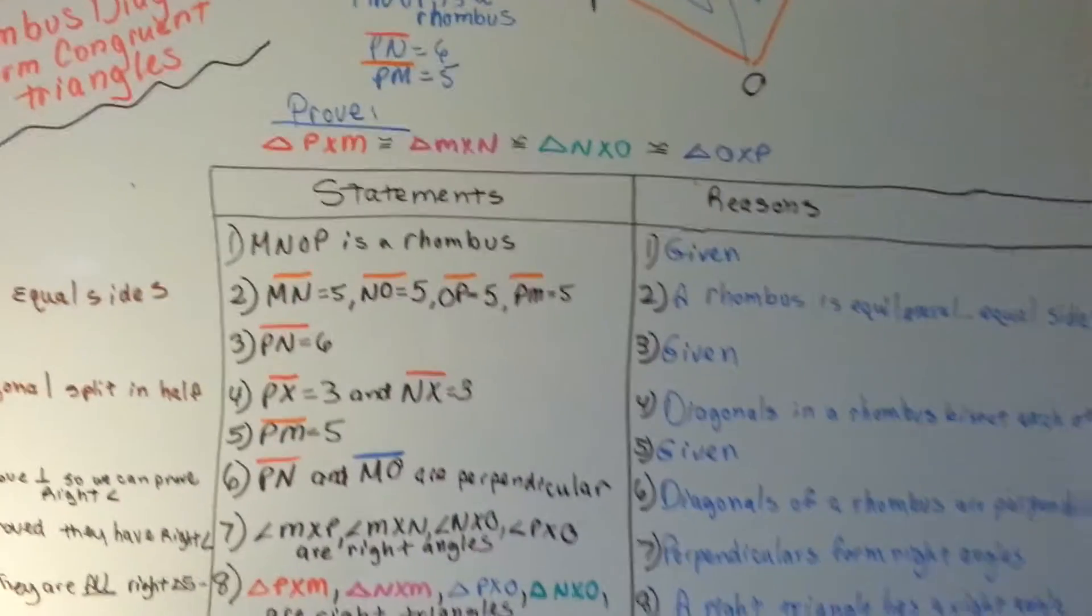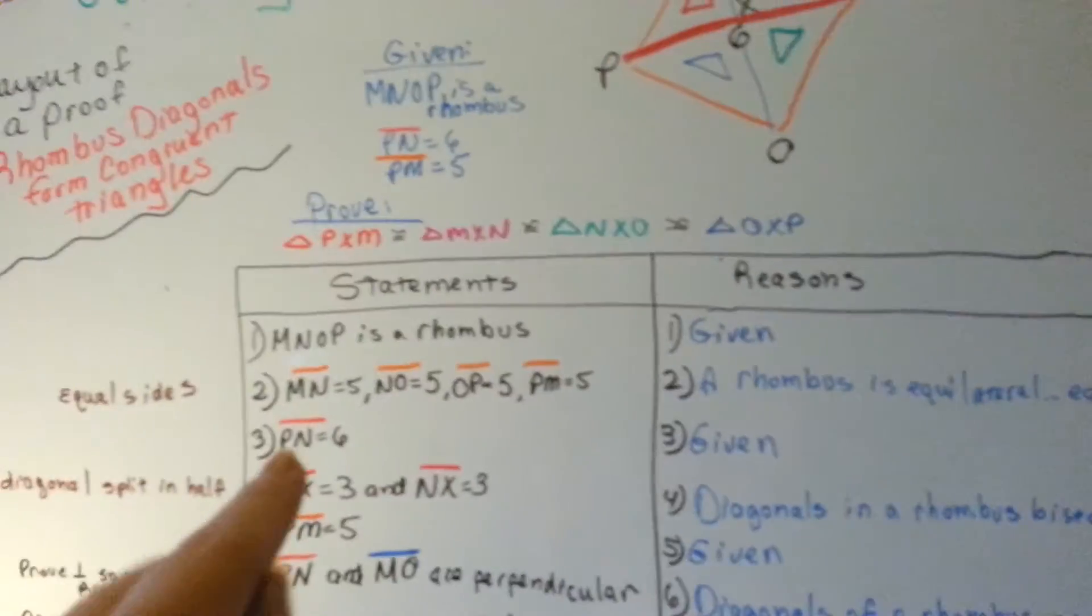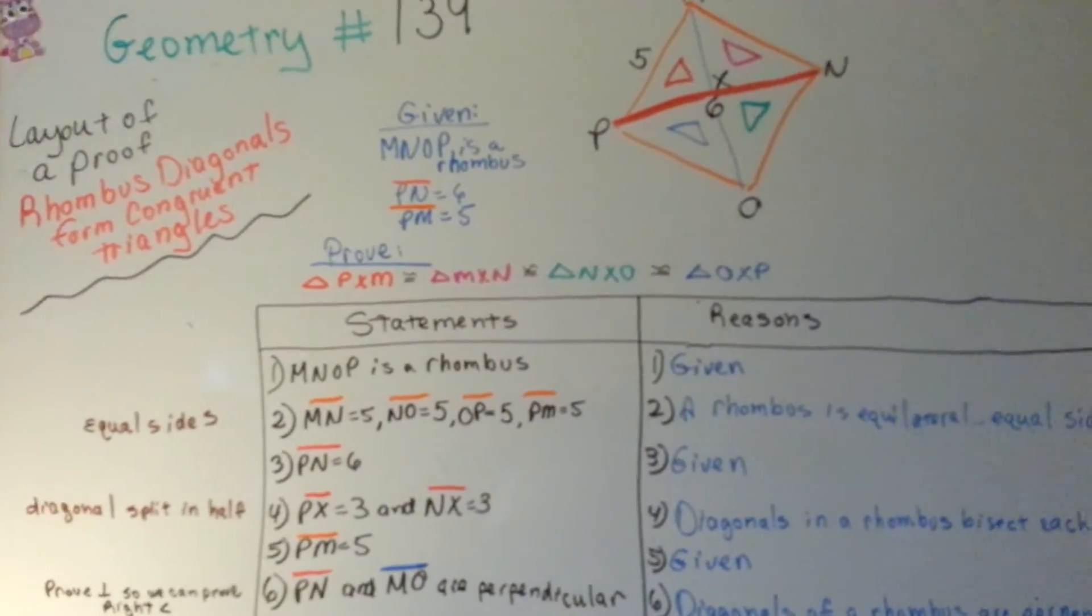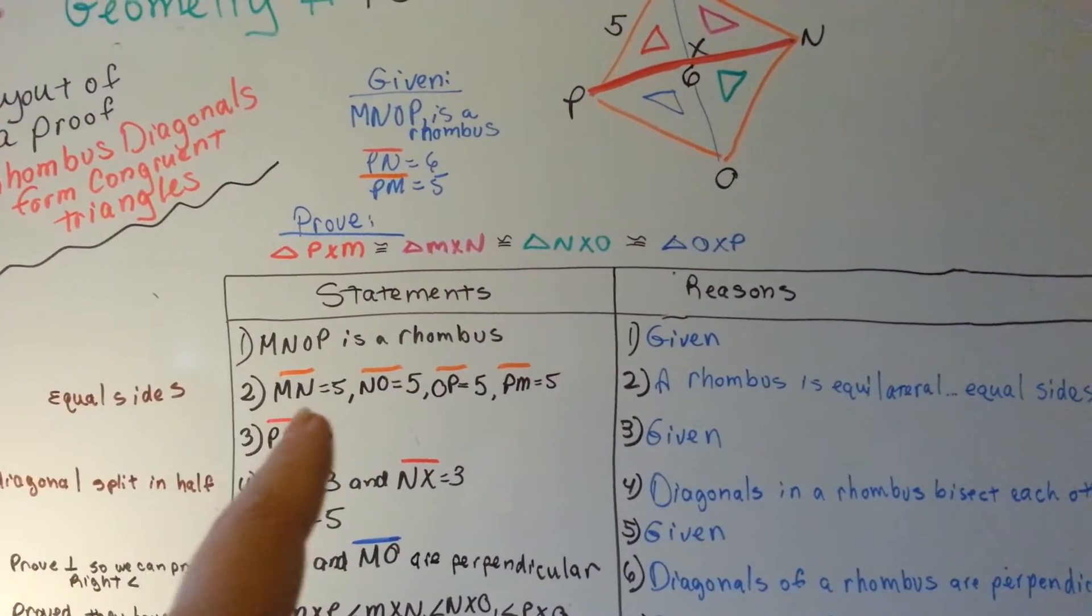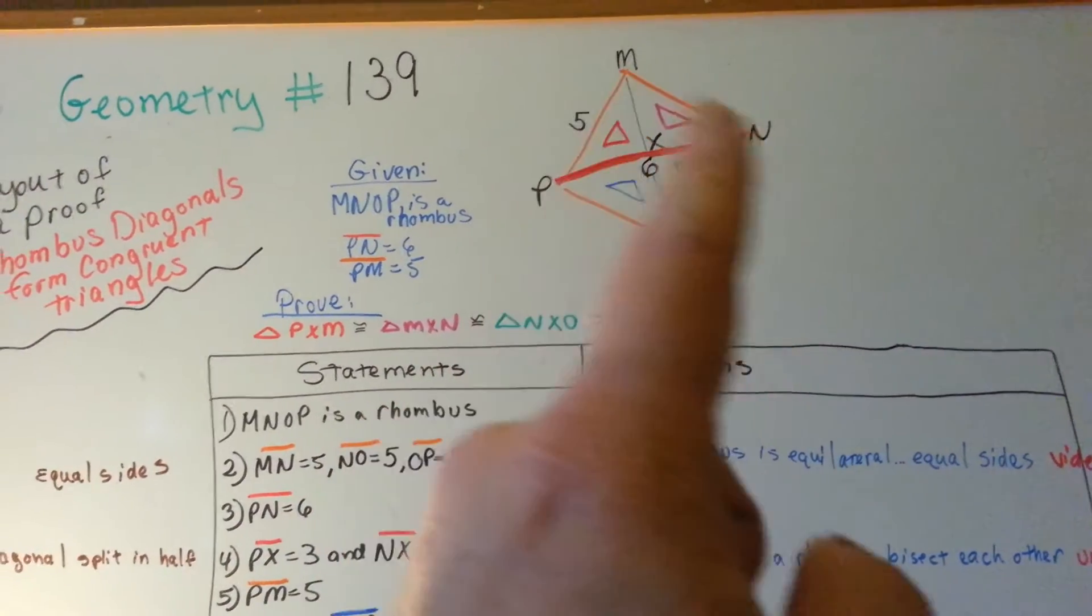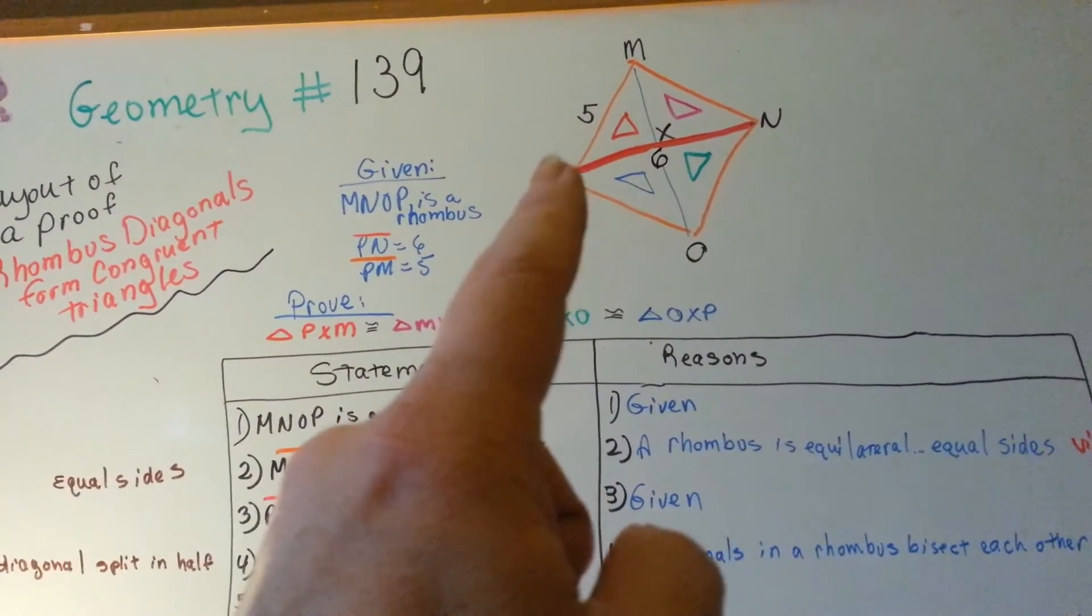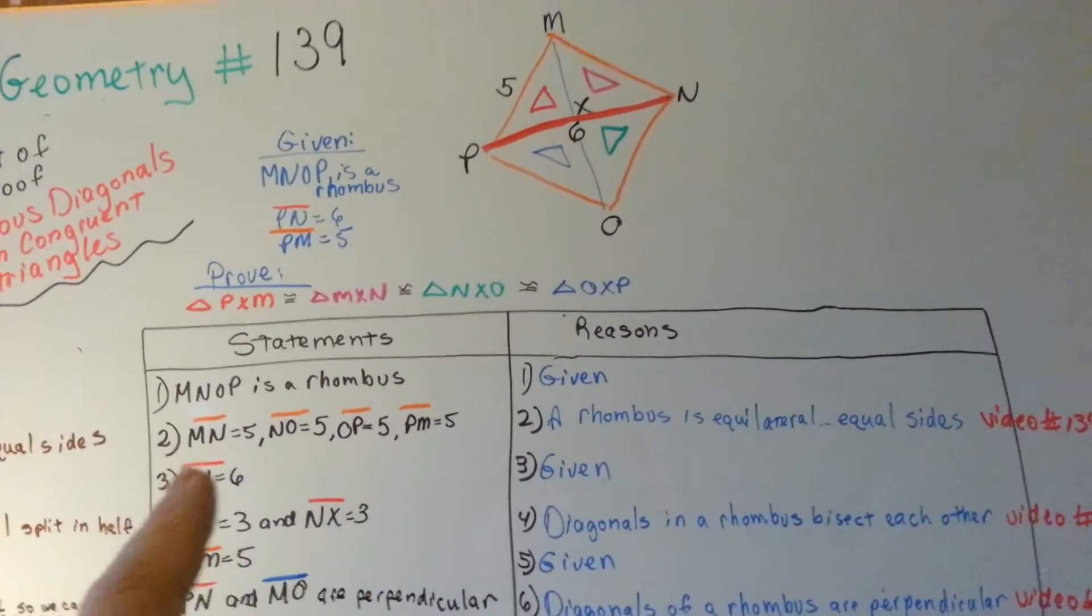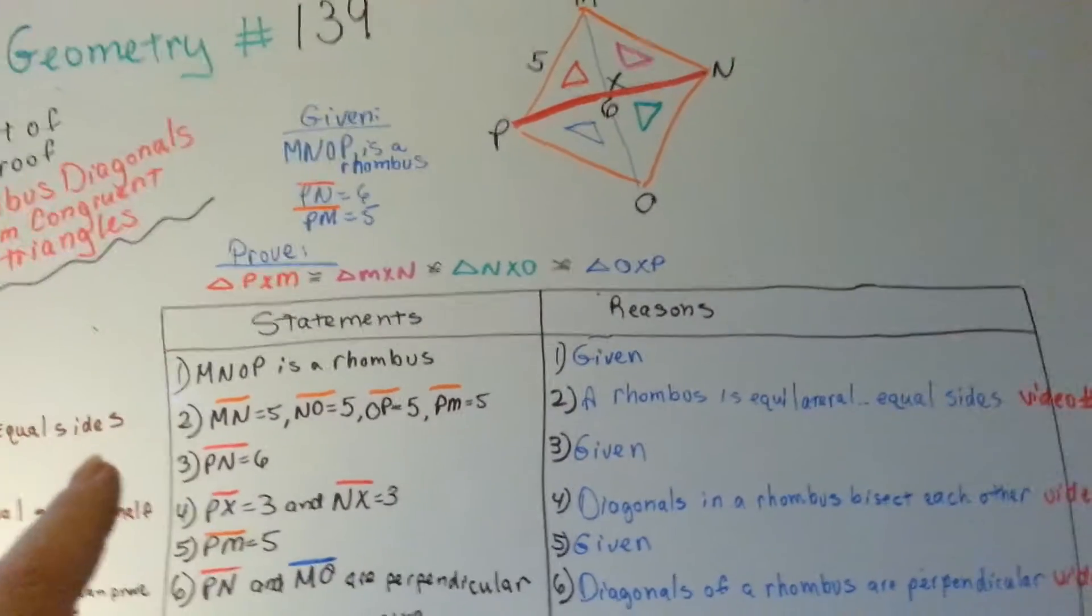So our first statement is that MNOP is a rhombus and that's given. So because I'm trying to prove that these triangles are congruent I need to prove that they have equal parts. So to say they had equal sides, MN is equal to 5 because PM is given. See that? So because a rhombus is equilateral and has equal sides, I was able to say that all of these are 5.